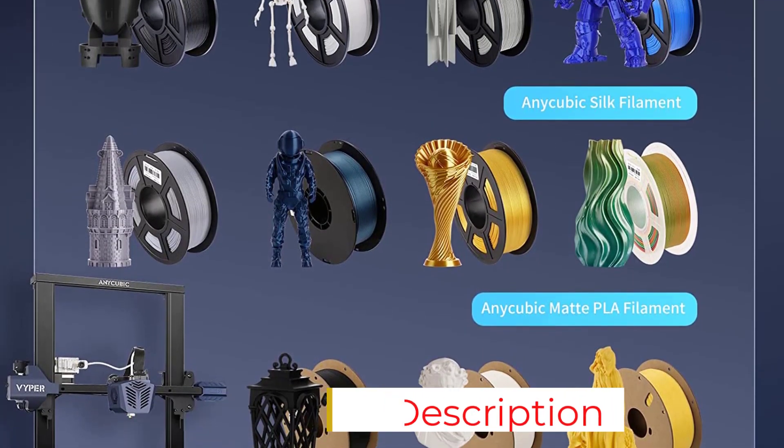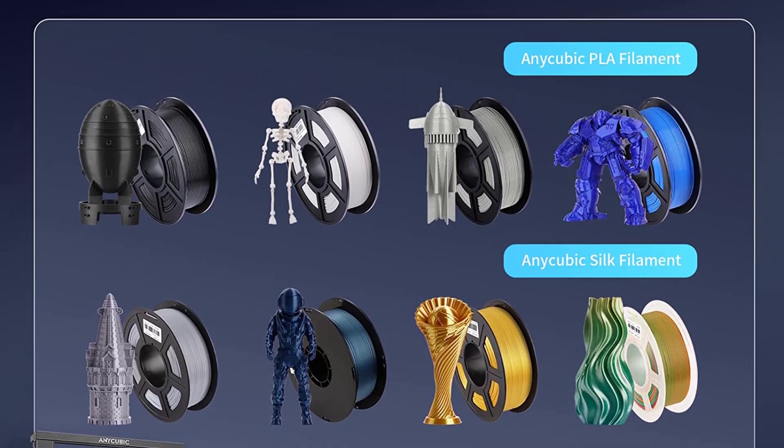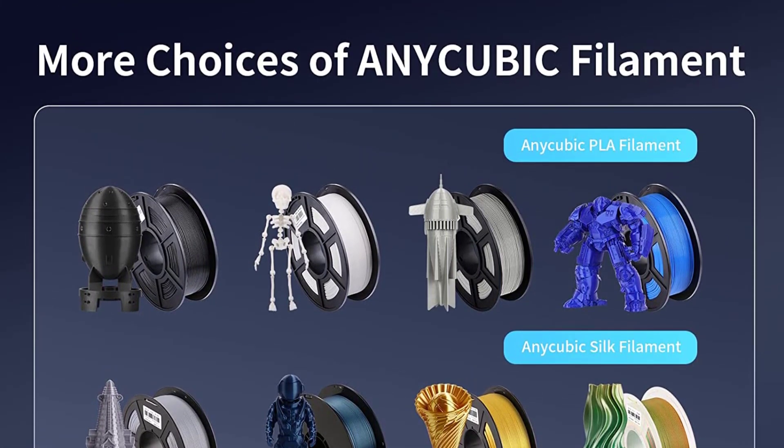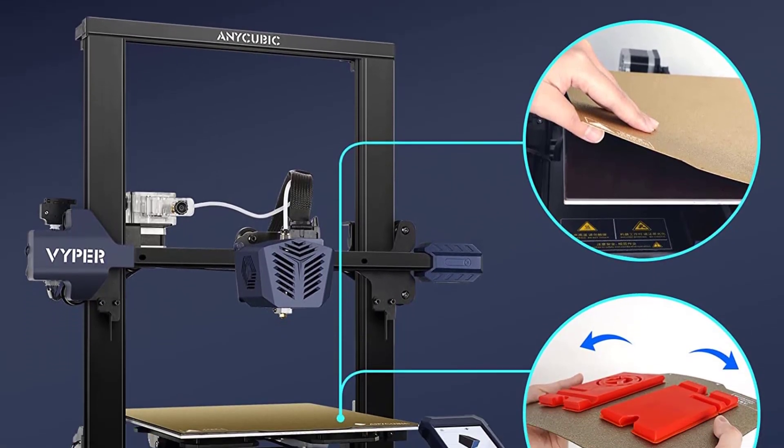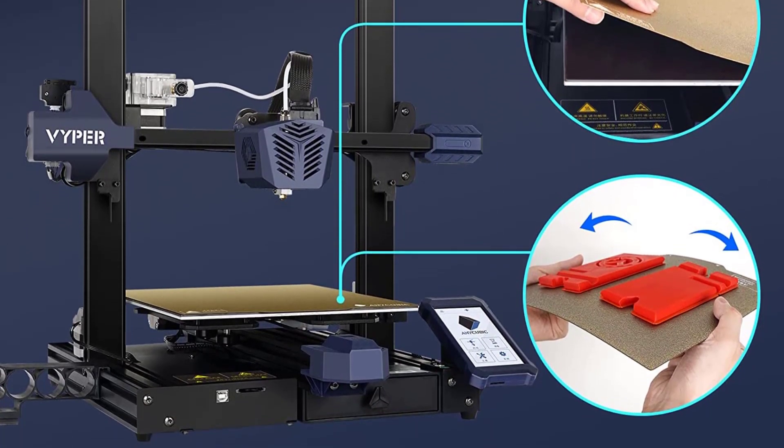The new PI Spring Steel Magnetic Print Bed can be lifted off the platform easily for easy removal of your finished parts, and is designed to be scratch and heat-resistant and to work well with standard filaments such as PLA, ABS, PTG, and TPU.